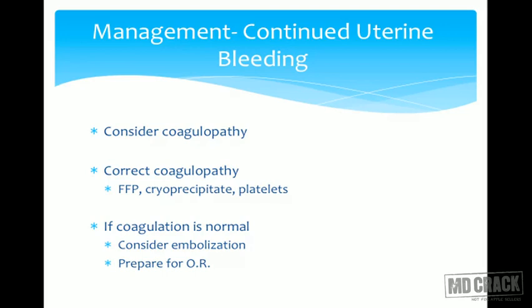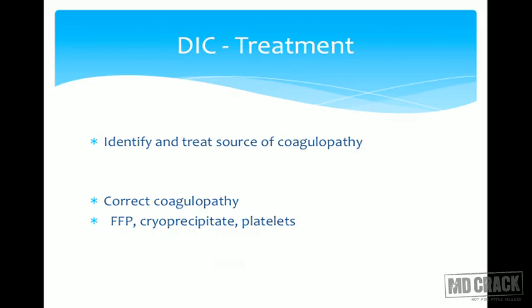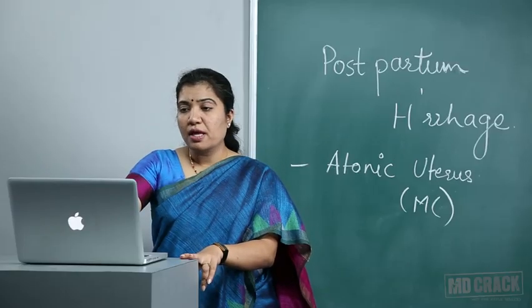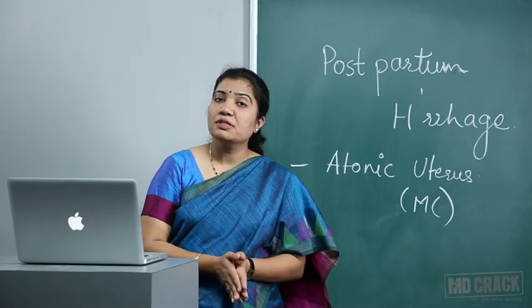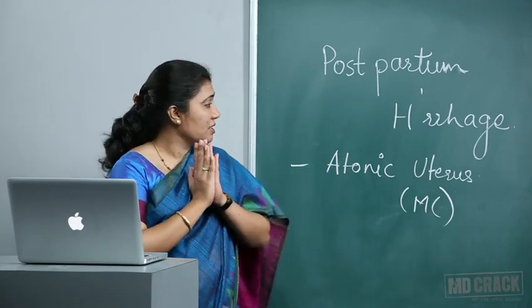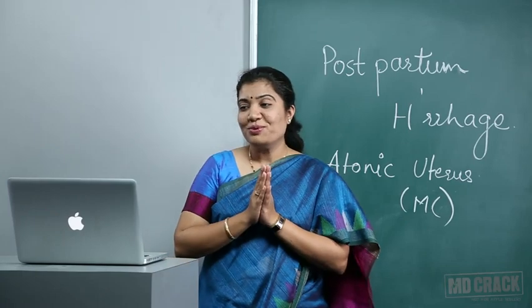If the patient continues to bleed after ruling out trauma and uterine causes, consider coagulopathy. Investigate and confirm. If coagulopathy is present, correct it with blood transfusions, fresh frozen plasma, cryoprecipitate, and platelets. If coagulation is normal, consider embolisation. Always keep DIC at the back of your mind and correct it if necessary. That concludes this comprehensive revision of postpartum haemorrhage.